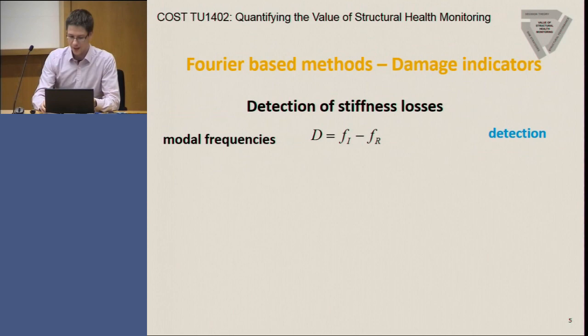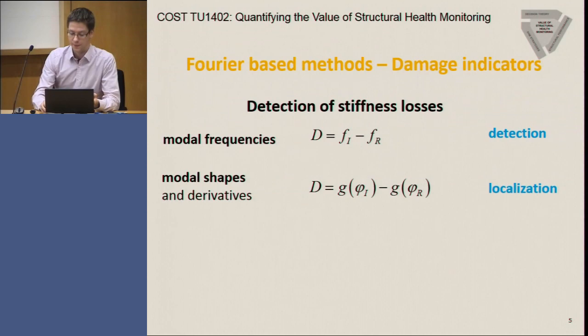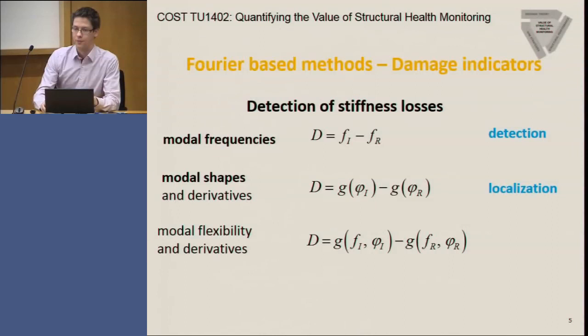A standard indicator is the modal frequencies that can be used for the detection of damages. Further features are the mode shapes that are identified and their derivatives, like curvatures, which can be used for localization. We also have features derived from the modal parameters, like modal flexibility and its derivatives, which can be used to detect losses of stiffness.